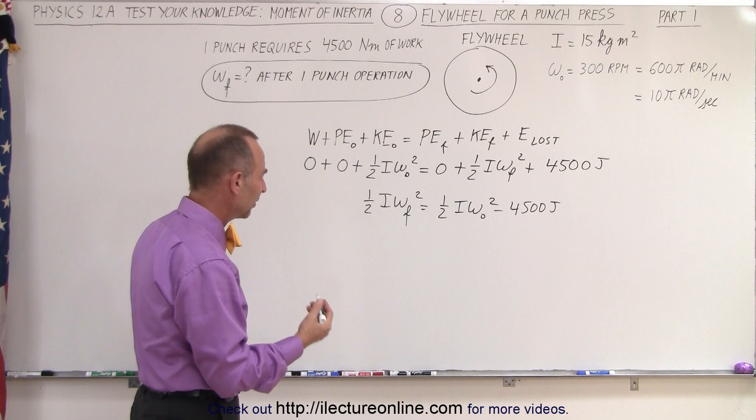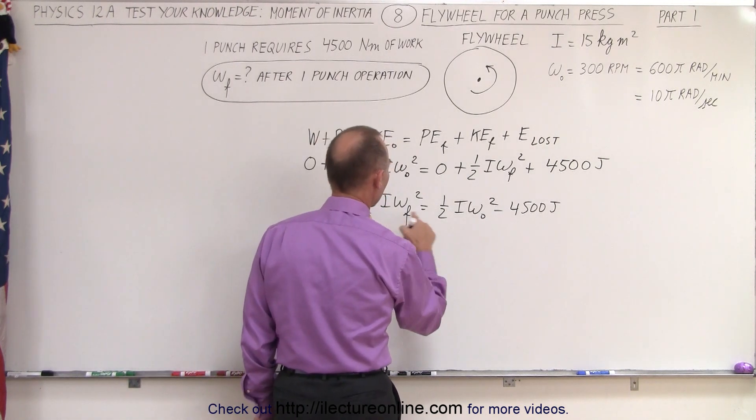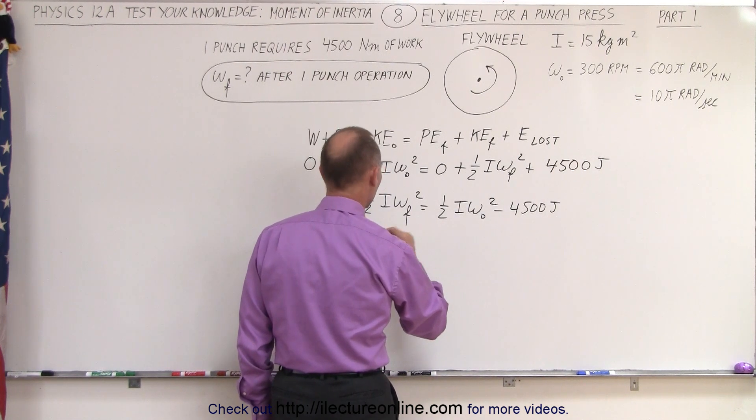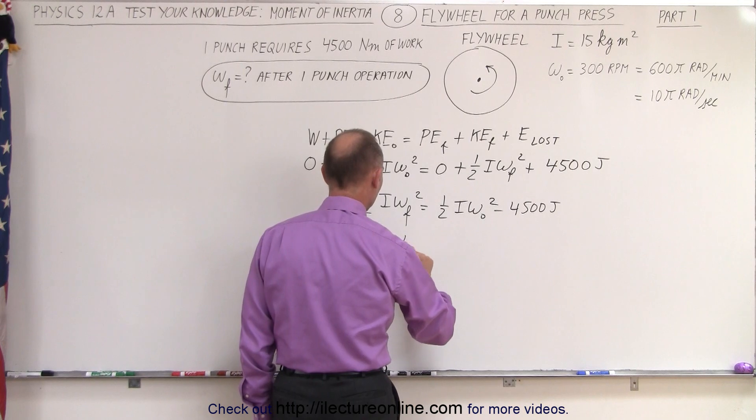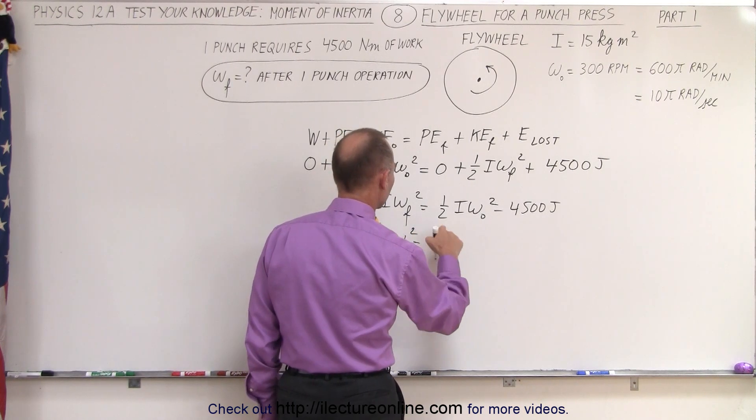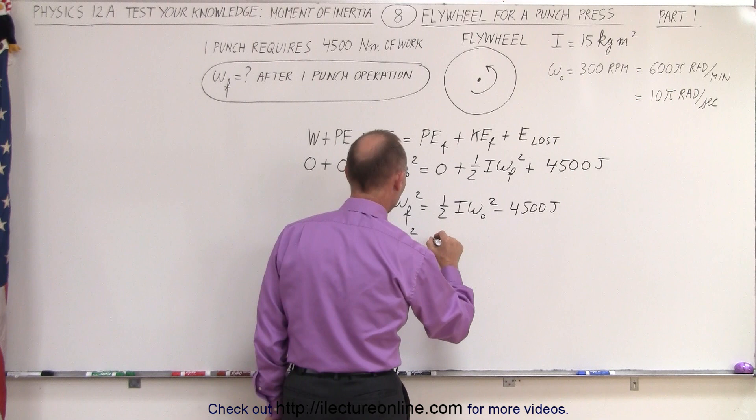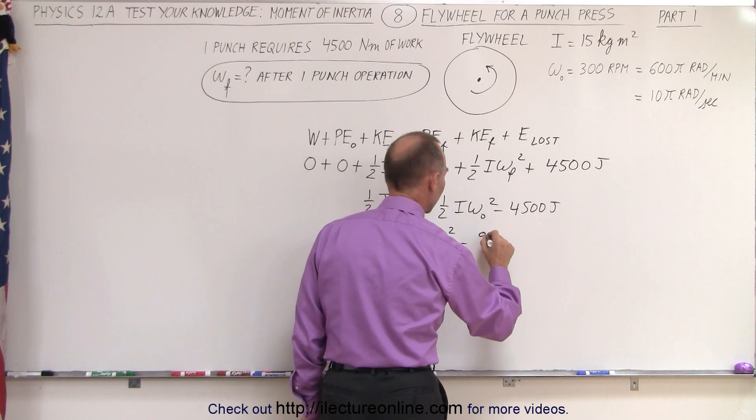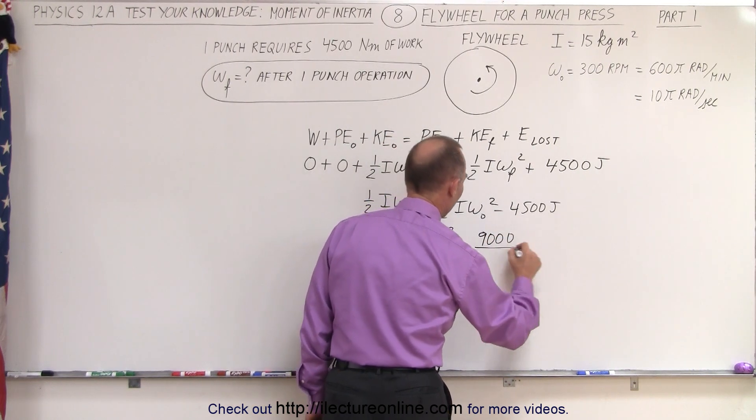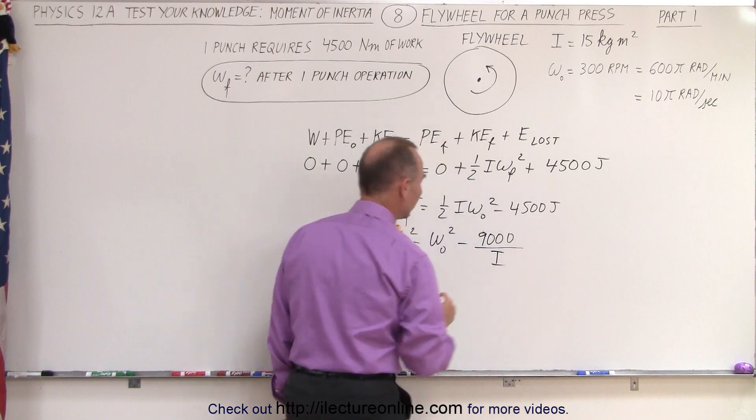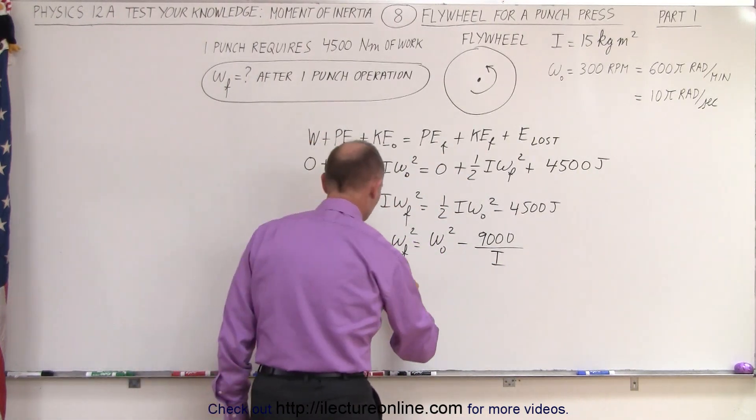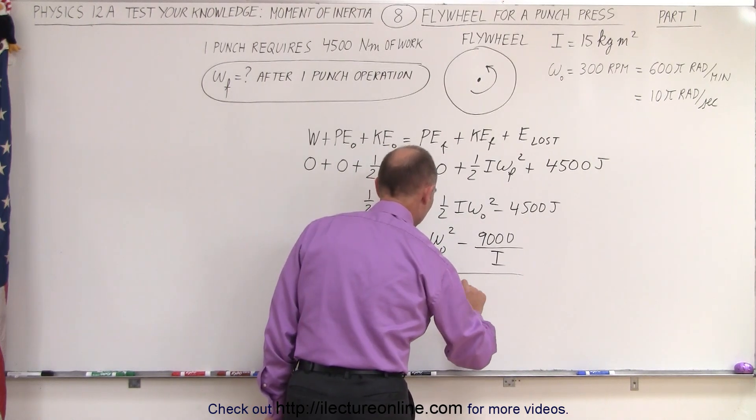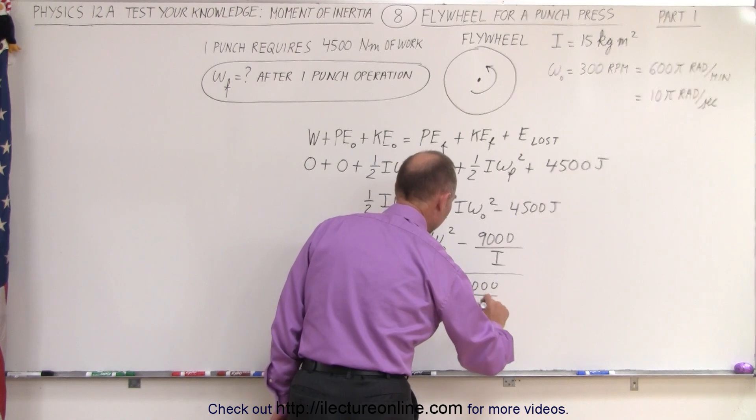Then I think I'm going to multiply everything by 2 and divide everything by I. If we do that, we get ω final squared is equal to, so that becomes 1, that becomes I divided by I, so it would be ω initial squared minus 2 times 4,500 is 9,000, and then divide by the moment of inertia, which is I. And then finally, when we take the square root of both sides, ω final equals the square root of ω initial minus 9,000 divided by I.